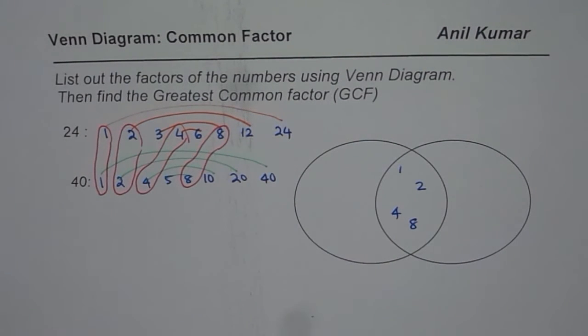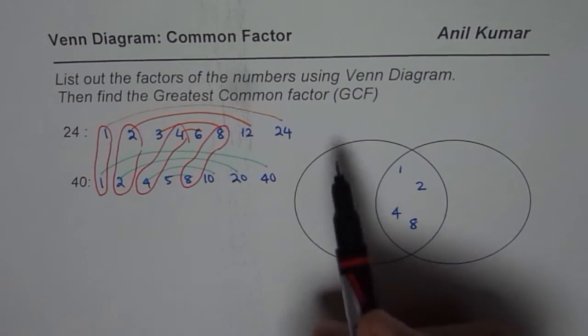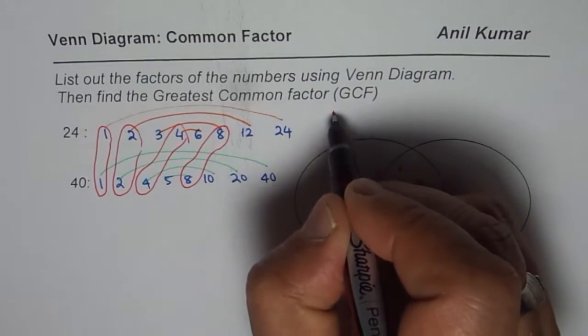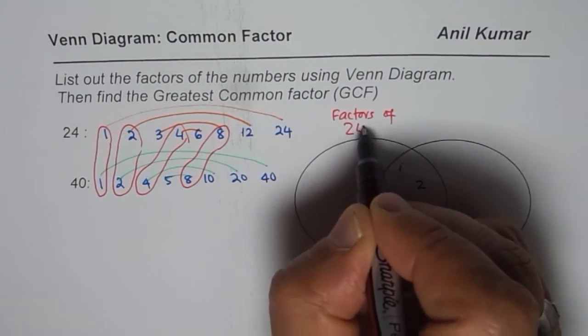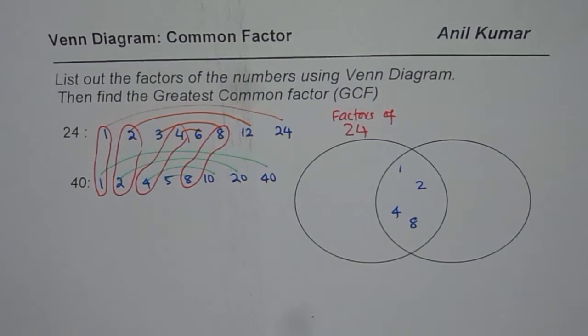List other factors. Now where? You can say one first circle is factors of 24. So write down factors of 24 and for the other circle we will write factors of 40.